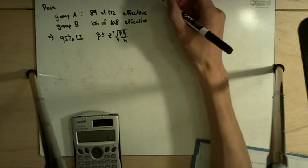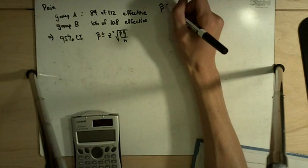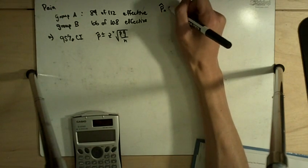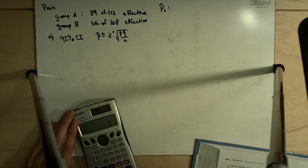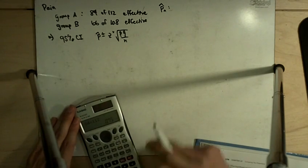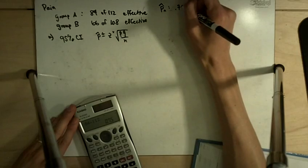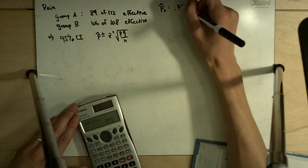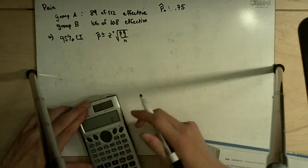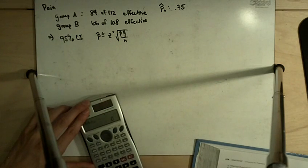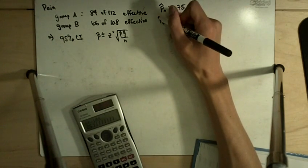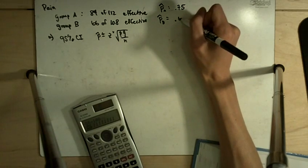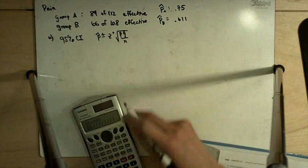So in this case, for group A, our P hat for group A is 84 divided by 112. So that's 0.75, 75%. And in group B, 66 out of 108 is going to be 0.611.